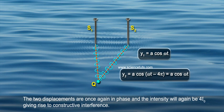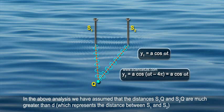The two displacements are once again in phase and the intensity will again be 4I0, giving rise to constructive interference. In the above analysis,